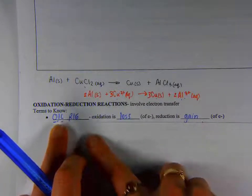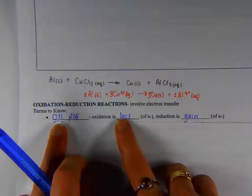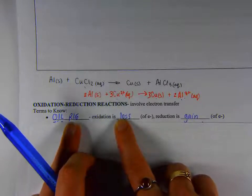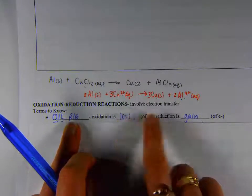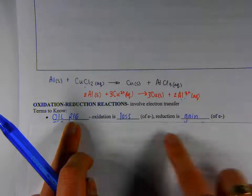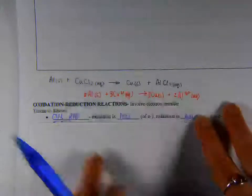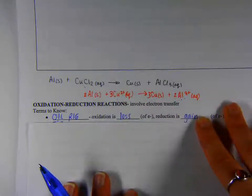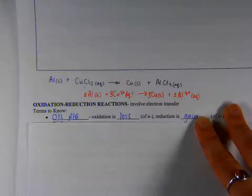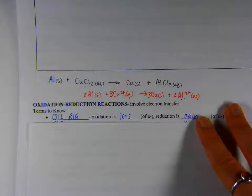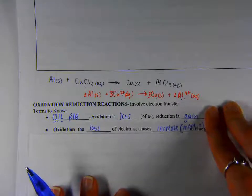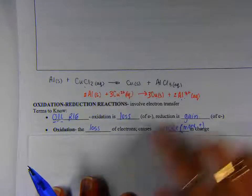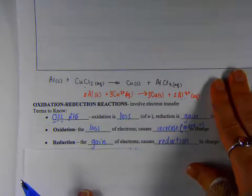Oil, O-I-L, stands for oxidation is loss of electrons. Reduction, rig, stands for reduction is gain of electrons. So we're always referencing the electrons here. Your job, usually with redox reactions for now, is to figure out what gets oxidized and what gets reduced. So one more time, oxidation is the loss of electrons, and then reduction is the gain of electrons.